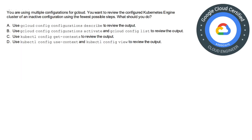Moving on to the next question. You are using multiple configurations for gcloud and want to review the configured Kubernetes Engine cluster of an inactive configuration using the fewest possible steps. The options are: A) Use gcloud config configurations describe; B) Use gcloud config configurations activate and gcloud config list; C) Use kubectl config get-context; D) Use kubectl config use-context and kubectl config view. The correct answer is option D: use kubectl config use-context and kubectl config view.